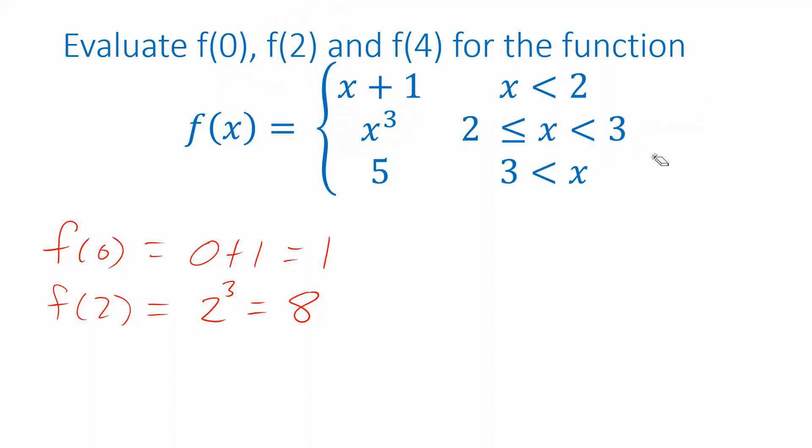One more. Let's evaluate f of 4. So 4 is greater than 3. Therefore, we're supposed to use the rule from the third line of this function to evaluate f of 4. But notice that this line is constant. So, no matter what number I plug in for x, if it's anything greater than 3, the output is always going to be 5.